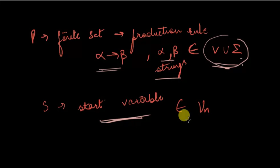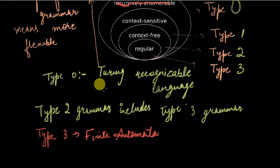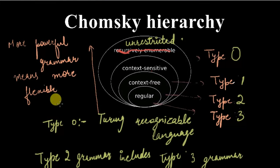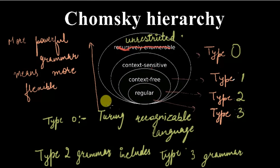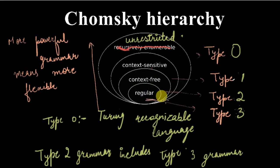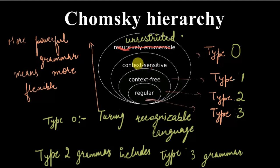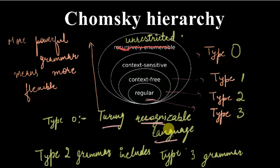Next comes the Chomsky classification. Chomsky was a scientist who classified grammars into four types: Type 0, Type 1, Type 2, and Type 3. Type 3 grammar is called regular grammar, which uses finite automata. Type 2 grammar is context-free grammar. Type 1 grammar is context-sensitive grammar. Type 0 is the unrestricted grammar, which has the Turing-recognizable language, and the machine formed through it is called the Turing machine.